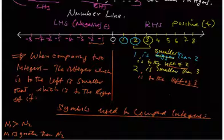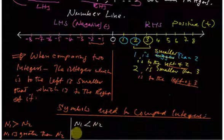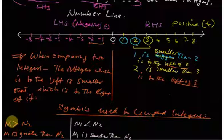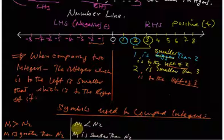But if the symbol opens the other way — if we have N1 and then the symbol opens toward N2 — here we see that N1 is smaller than N2. N1 is still to the left, but the symbol has changed. This symbol opens to the right, meaning N2 is greater than N1, or N1 is less than N2.